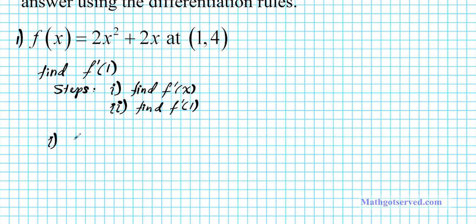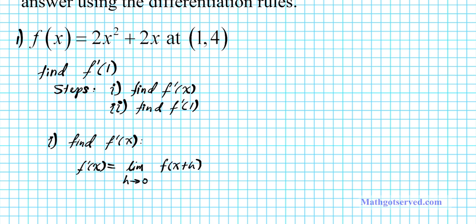Let's start with step one: we want to find f prime of x. There are two ways of doing this — you can use the rules, or you can use the limit definition of derivatives, which is what we are going to be doing here. We know that f prime of x using the limit definition of derivatives is the limit as h approaches 0 of f of x plus h minus f of x divided by h. Some textbooks use delta x to mean the same thing. This is a formula for calculating the slope of a line given one point and the function.